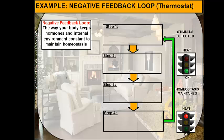The negative feedback loop in our bodies works just like the thermostat in your house. Your thermostat is that device on the wall that monitors the room temperature and makes sure that the room temperature stays at the temperature that it's set at, so the room doesn't get too cold and the room does not get too hot. So let's take a look at how a thermostat works.